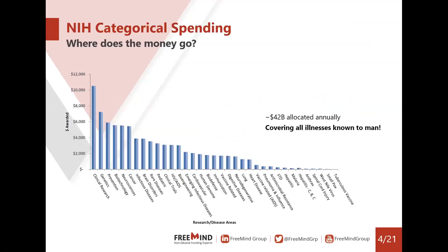Looking at NIH categorical spending, it really covers any illness known to man. Before you start adding up these numbers, it's important to note that these categories are not mutually exclusive — there's a lot of overlap. For example, we can see areas in neurosciences, brain disorders, and neurodegenerative disease listed simultaneously. Funding is available to all types of projects dealing with human health.